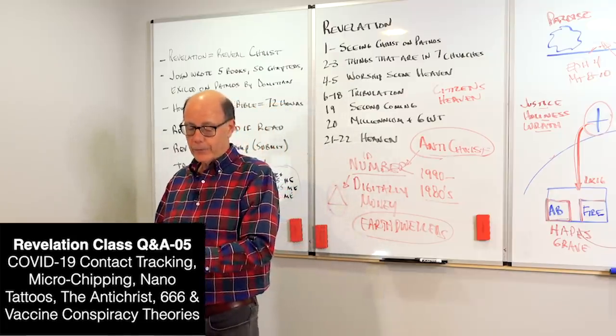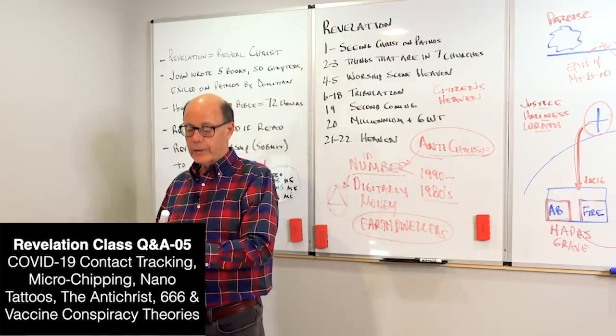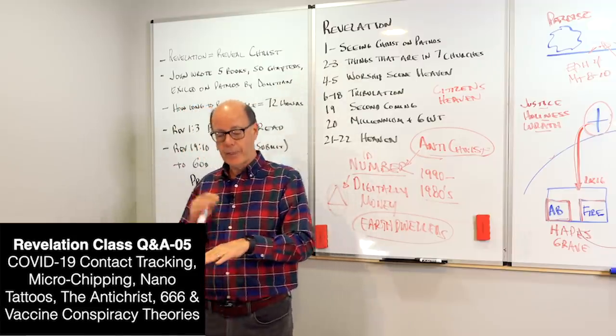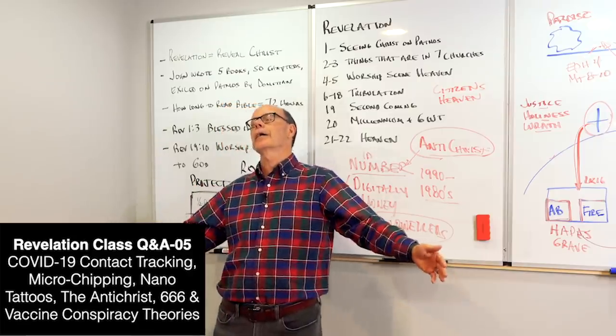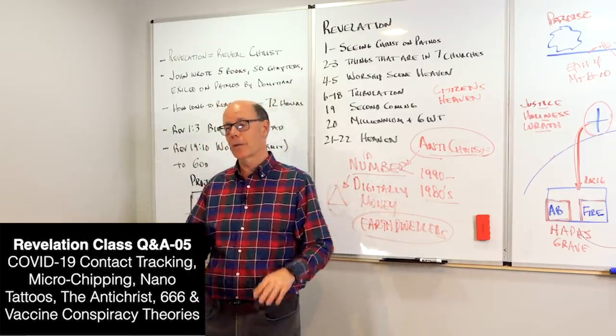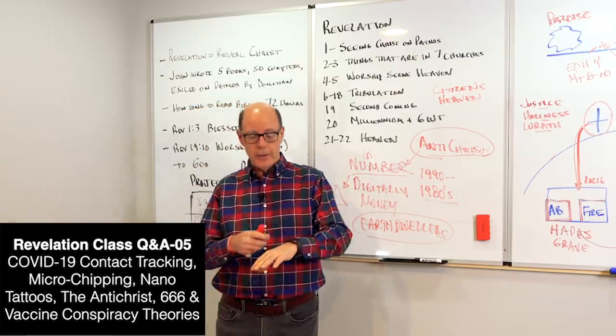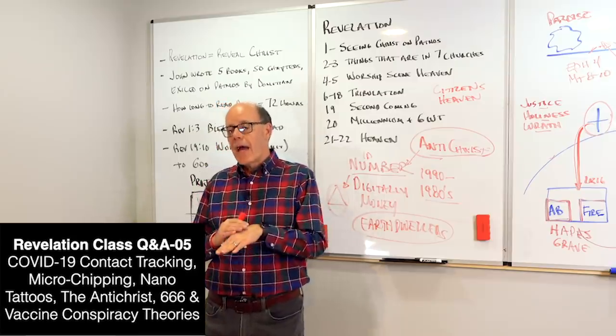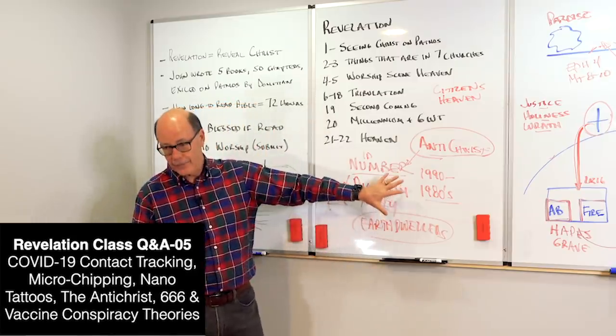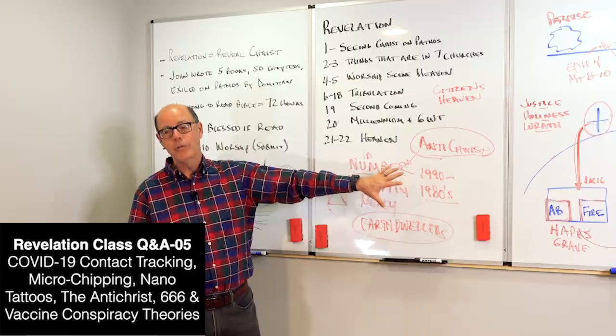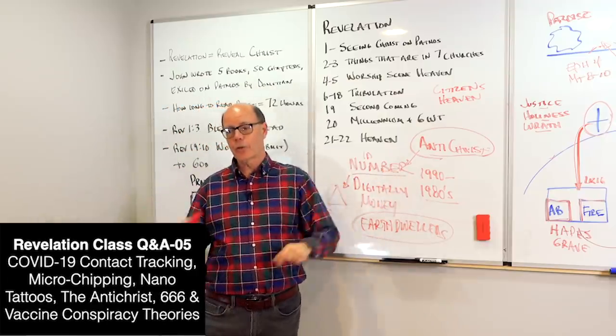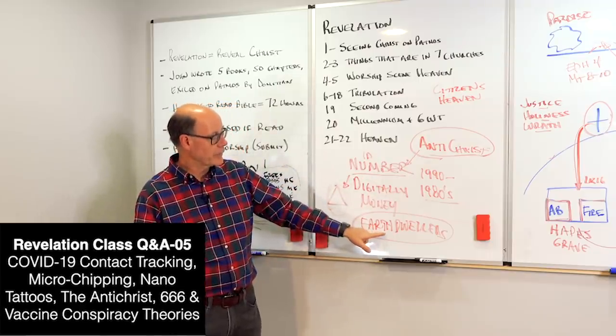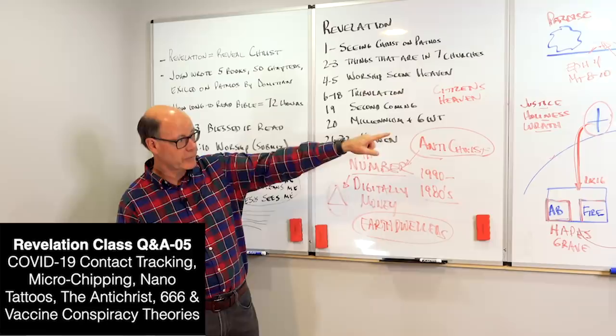So, it's very possible that we will start being offered implants that will have our medical history on it. So that when you're in a car wreck, all they do is just check that and they go, Oh, you're allergic to penicillin or you're RH negative or you have AB positive blood. That is not keeping people from heaven. Nor is Bill Gates' COVID-19 vaccine drive. The people that don't go to heaven are the ones that reject the cross, the work of Christ on the cross.